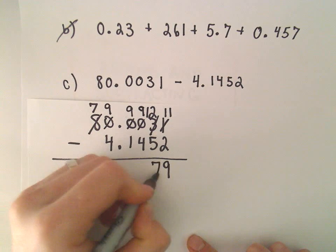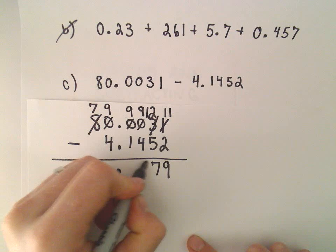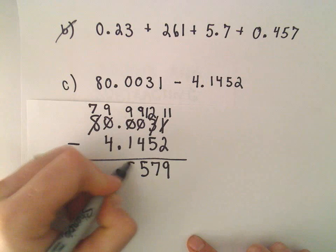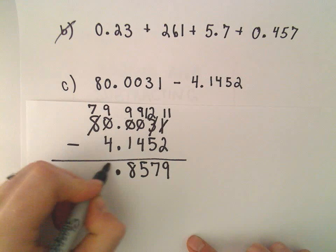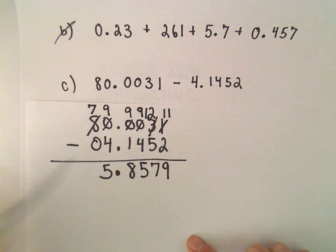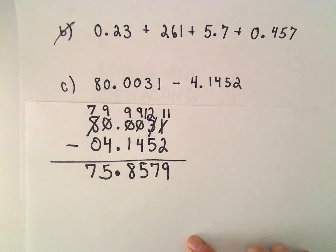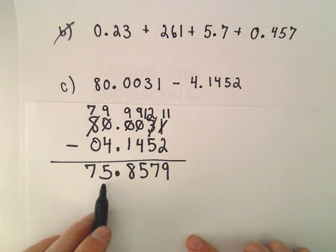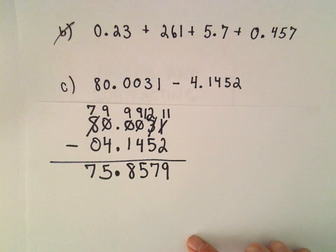So 12 minus 5 is 7, 9 minus 4 is 5, 9 minus 1 is 8, 9 minus 4 is 5, and then this is just a 0, so 7 minus 0 is 7. After we do our subtraction, we're left with 75.8579 as our solution.